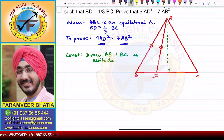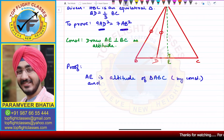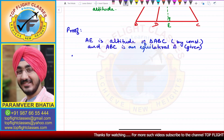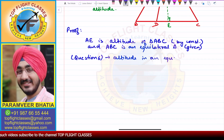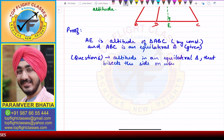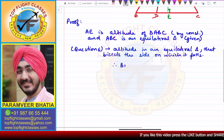So, AE is the altitude of triangle ABC — this is by construction. Since triangle ABC is an equilateral triangle, as proven in a linked question, the altitude in an equilateral triangle bisects the side on which it falls. In this case, it falls on BC. Therefore, BE is equal to EC, and each is equal to half of BC.